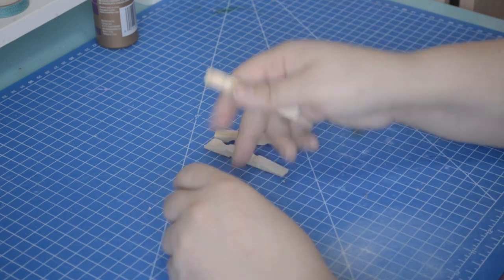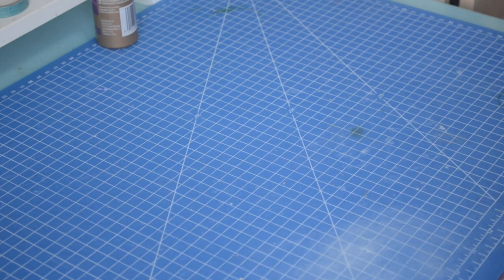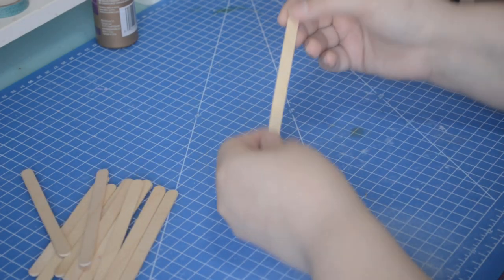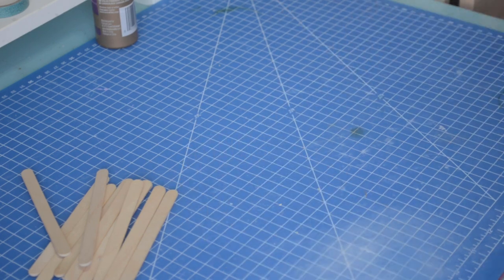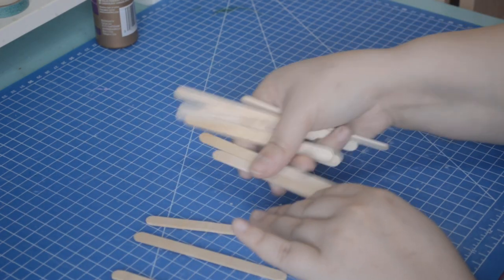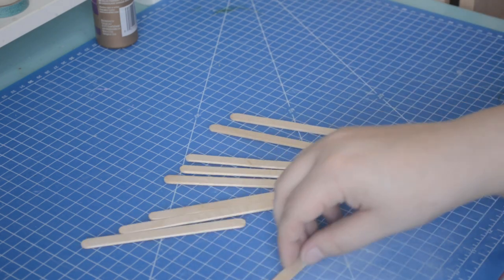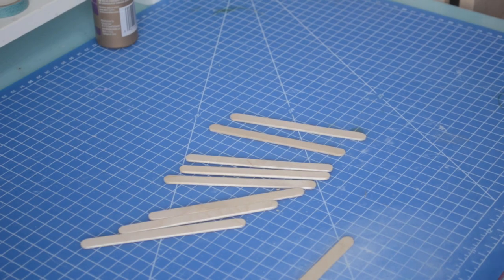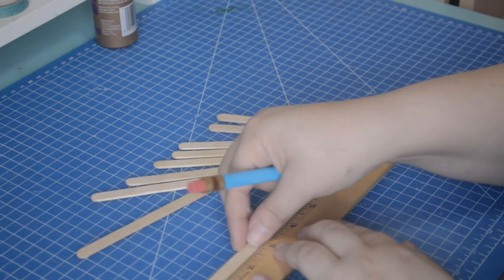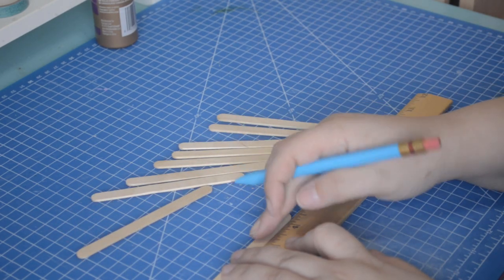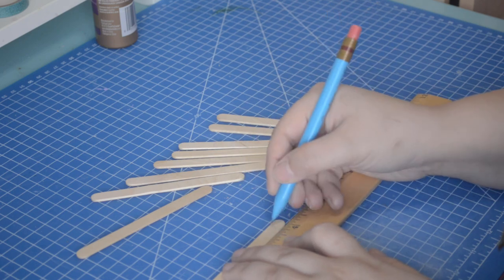The base of the bed will be made using both clothespins and popsicle sticks. Measure the preferred width of your bed and mark it with a pencil, then use the same marks to measure seven total popsicle sticks.